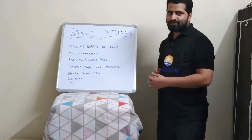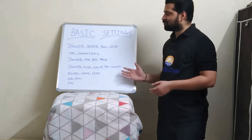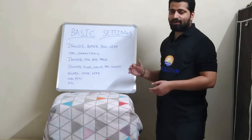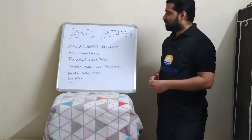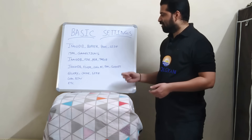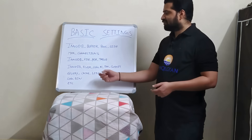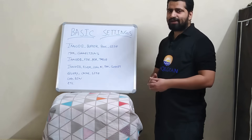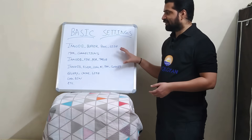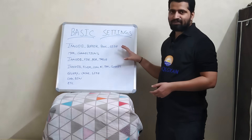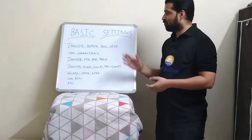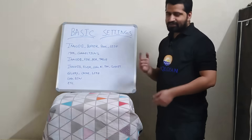There are zillions of InnoDB and MySQL settings, but these are the key ones you should remember before and during hardening and before handing over the MySQL server to the development team: innodb_buffer_pool_size, max_connections, innodb_file_per_table, innodb_flush_log_at_trx_commit, query_cache_size, log_bin, and others. I'll go through all of these one by one.